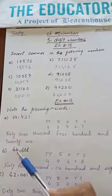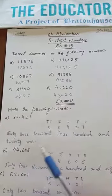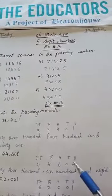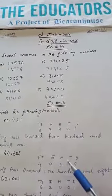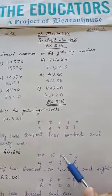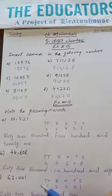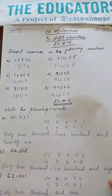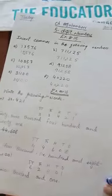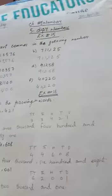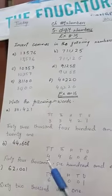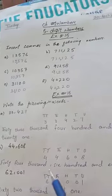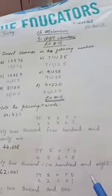In part B, the value is 44,608. First of all, we will write the place values: units, 10, 100, 1,000, 10,000. Then 44,608.